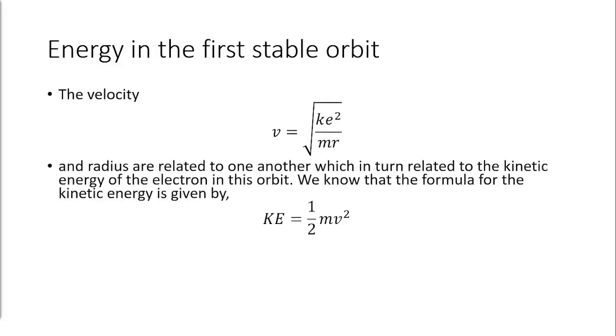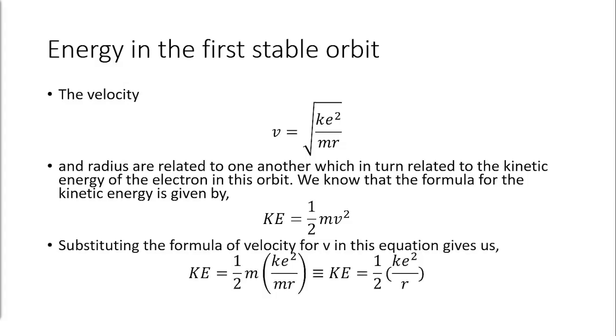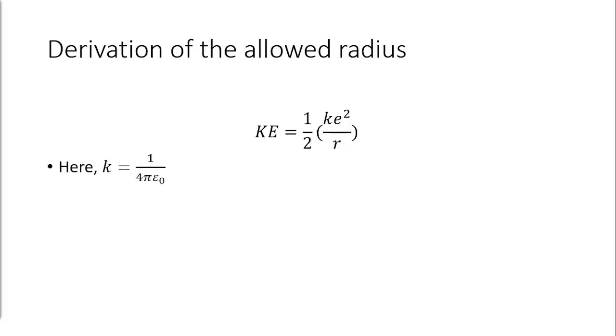The velocity and radius are related to one another which in turn related to the kinetic energy of the electron in this orbit. We know that the formula for the kinetic energy is given by KE = (1/2)*m*v^2. Substituting the formula of velocity for v in this equation gives us KE = (1/2)*m*(k*e^2/mr), KE = (1/2)*k*e^2/r. k = 1/(4*π*ε_0). We have E = -e^2/(8*π*r*ε_0), where ε_0 is called the permittivity of free space. Each allowed orbit will and can only contain a discrete amount of energy, hence it is otherwise called as energy levels.